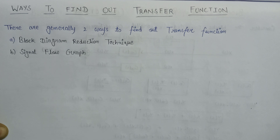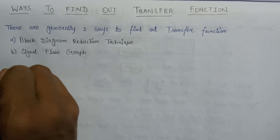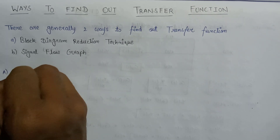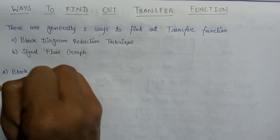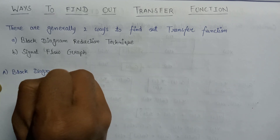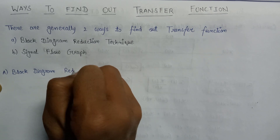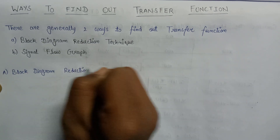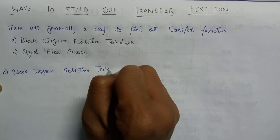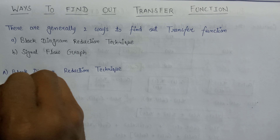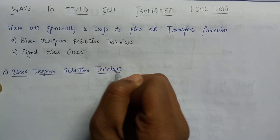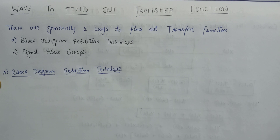Now let us deep dive into the concept of block diagram reduction technique. A block diagram reduction technique is a method of simplifying or reducing the block diagram which is having many blocks, summing points, or takeoff points as well.